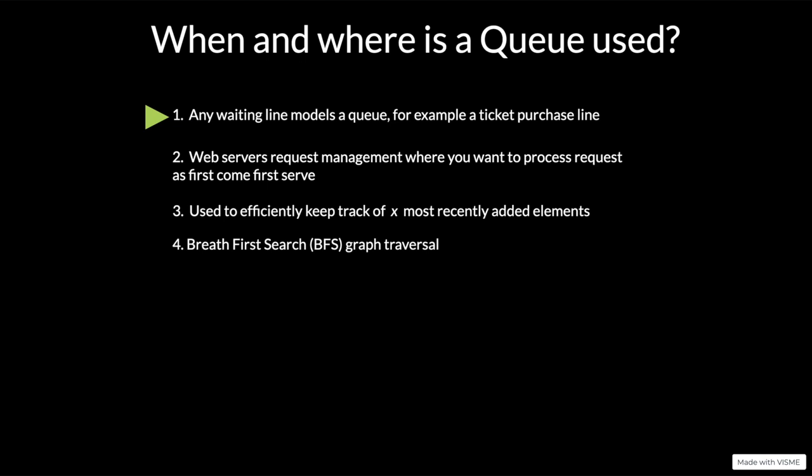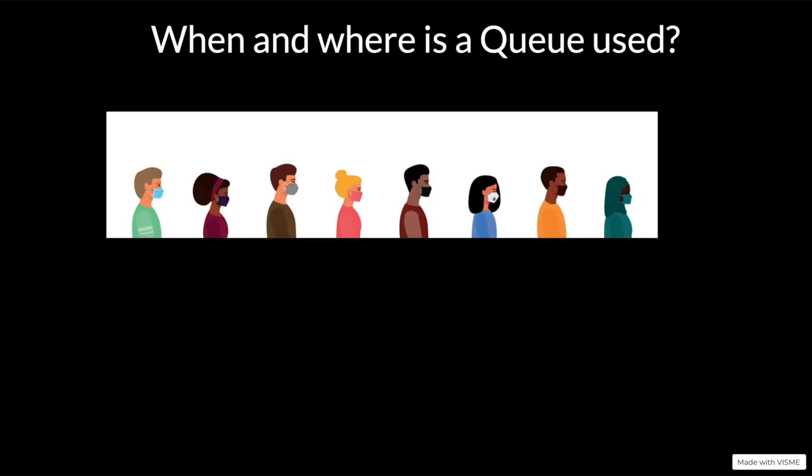When and where is a queue used? It is one thing to understand what a queue is, and another to understand where it can be applied. The first use case: any waiting line models a queue — for example, a ticket purchase line. Whether you want to withdraw money at an ATM machine or purchase a ticket, this orderly arrangement is an example of a queue model.